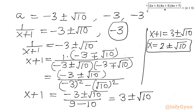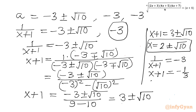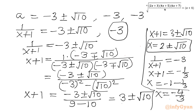For the case a = −3: 1/(x+1) = −3, so x+1 = −1/3, giving x = −1 − 1/3 = −4/3, with multiplicity 2.